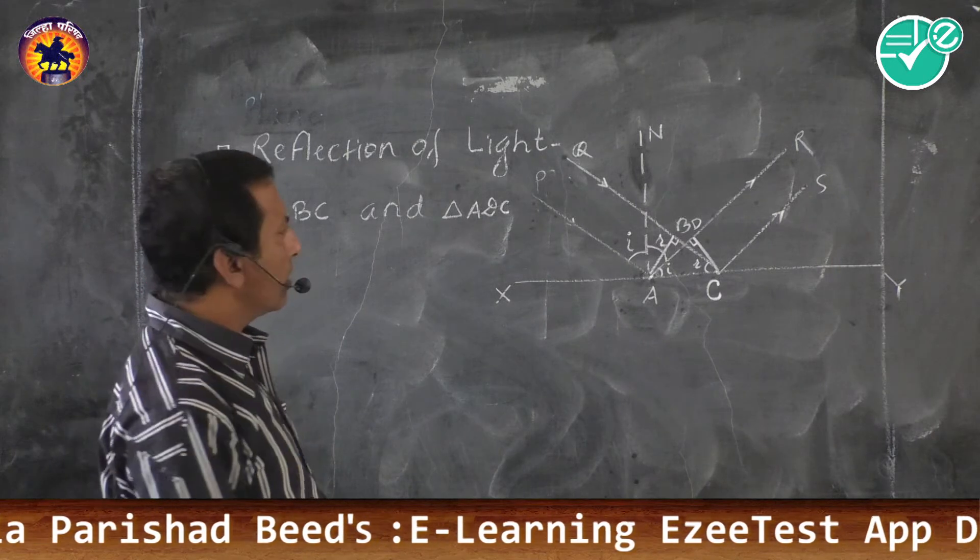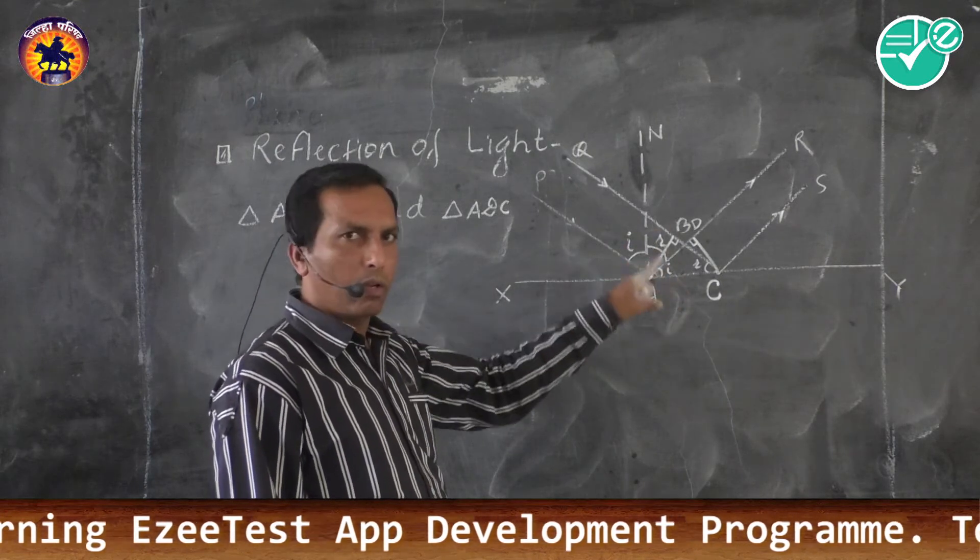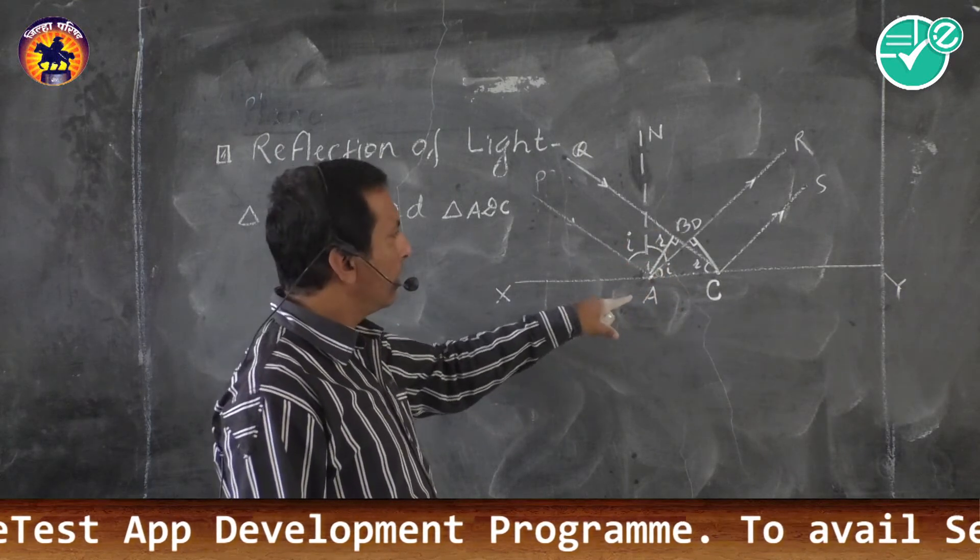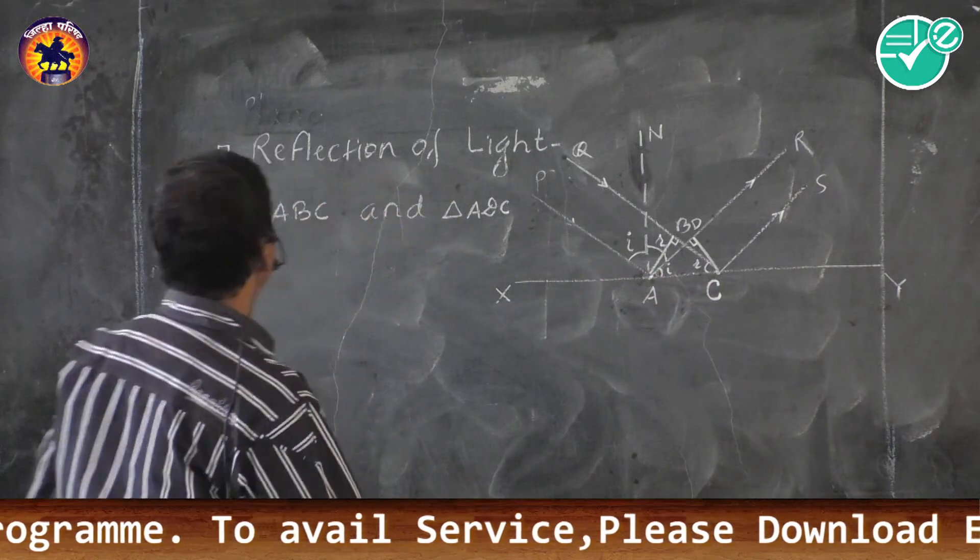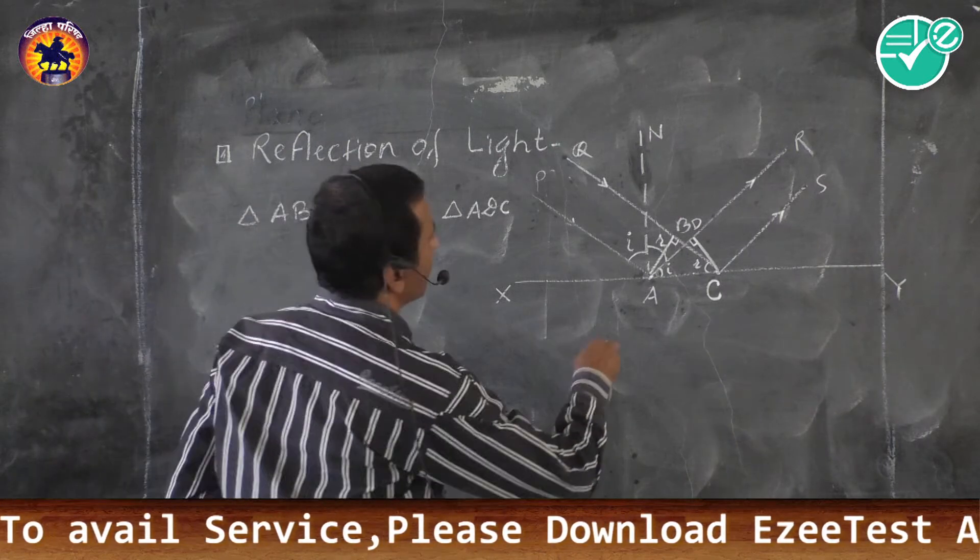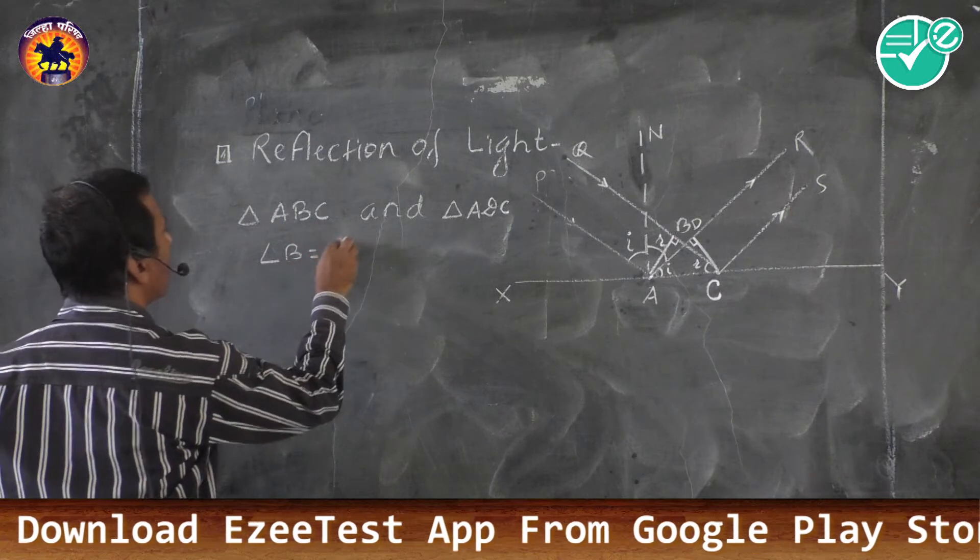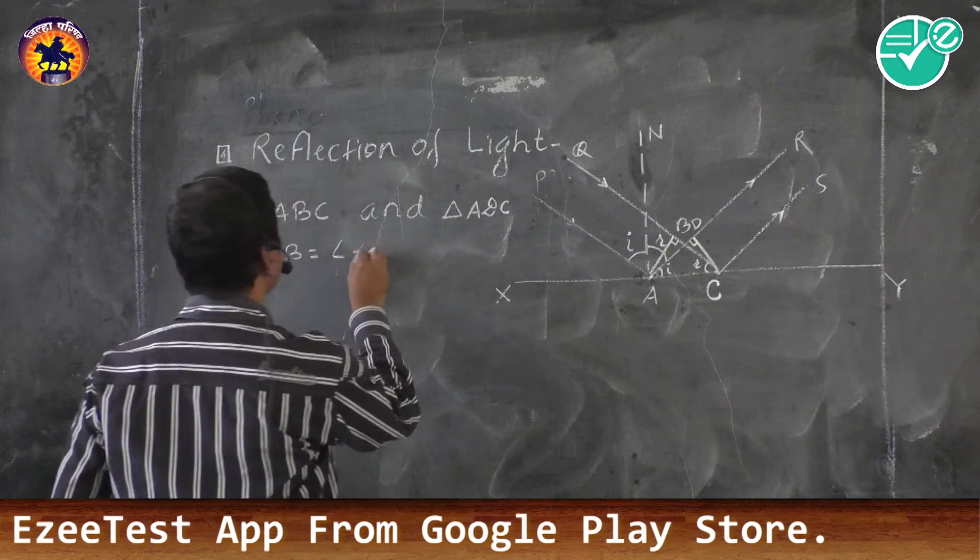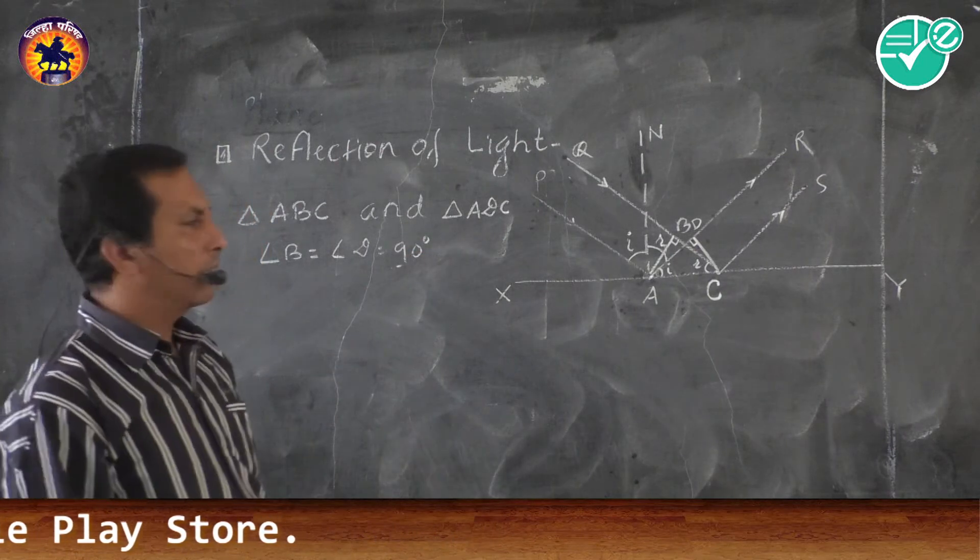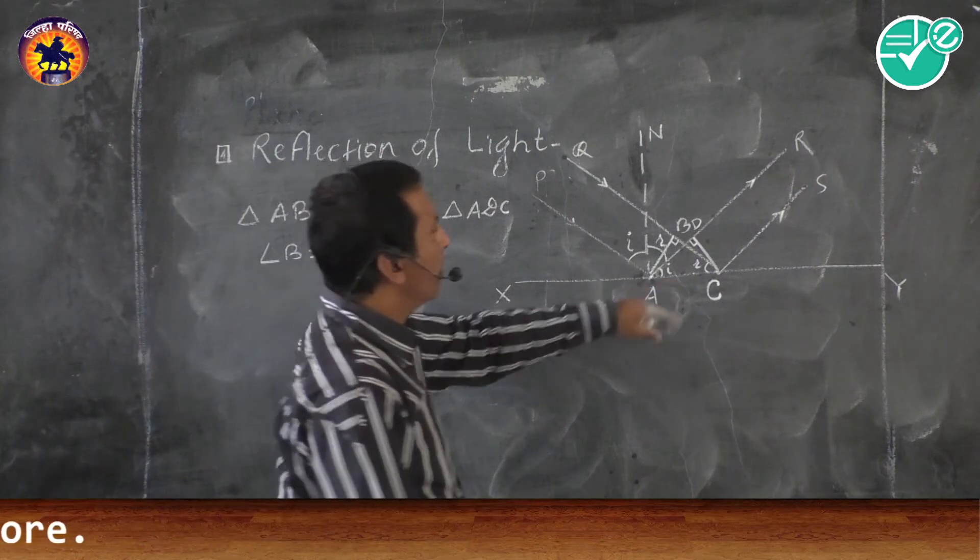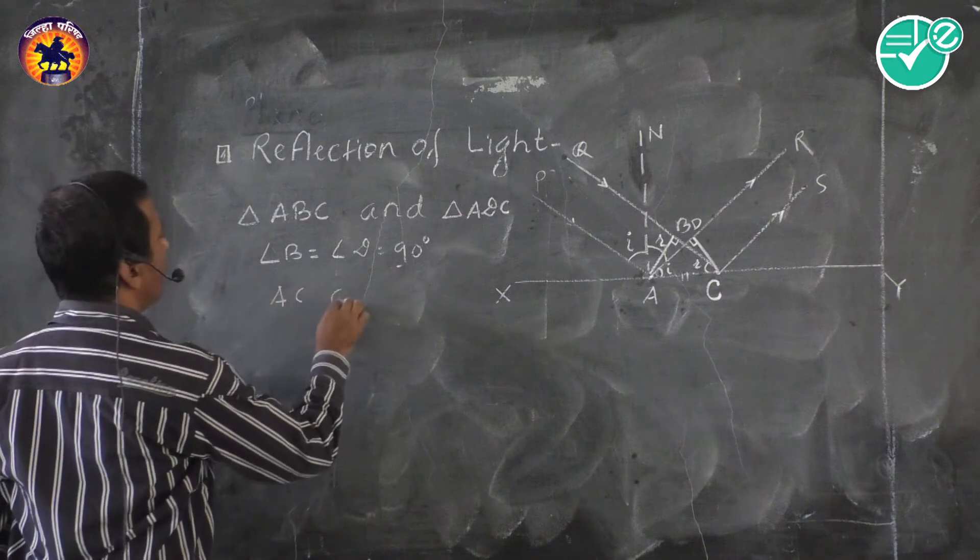If we are successful in showing these two triangles are congruent, then we can easily prove angle I is equal to angle R. But how? Let us say, angle B is equal to angle D. These two angles are right angles, having measure 90 degrees. AC is common between two triangles. Side AC is common.